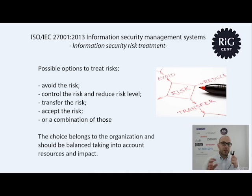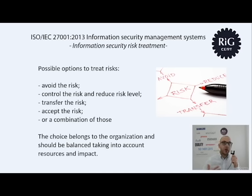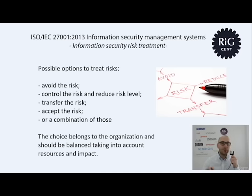ISO 27001 requires the organization to have controls in place for treating risks. This is why Annex A of the standard was developed — to help organizations not forget possible applicable controls. The second part of the course is about controls meant to treat potential risks.